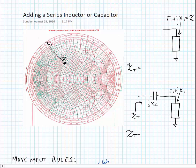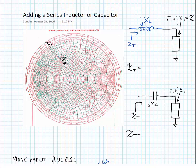Now we're going to focus on what happens when we add specific components to a network and how that triggers movement on the Smith chart. First we're going to look at adding a series inductor to a random load. Here I have a random load impedance R1 plus JX1, and we're going to add a series inductance JXL and look to see what the impedance is looking into the network after we've added the inductor.